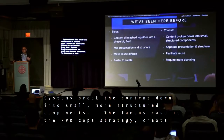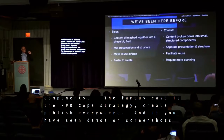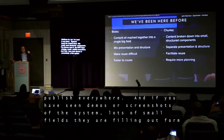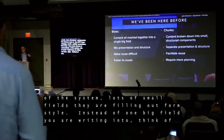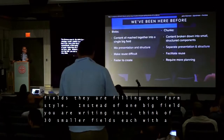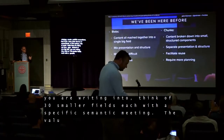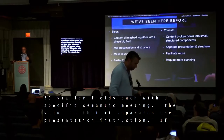Systems that are more chunk-based — and we can blame Karen McGrane for that term — try to break the content down into smaller, more structured components. A famous case study is the NPR COPE strategy: create once, publish everywhere. If you've seen demos of that system, it's lots of small fields filled out form-style. Instead of one big field, think of 30 smaller fields, each with a specific semantic meaning. The value is that it separates presentation and structure.